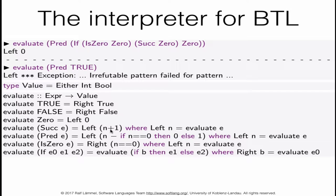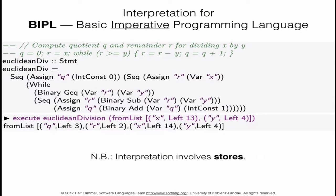For successor we construct n plus one, and for predecessor we check whether the intermediate result n is zero — if so we keep it, otherwise we subtract one. The 'is zero' test checks whether expression e evaluates to a number n equaling zero. The conditional of BTL is essentially translated into a conditional of the host language Haskell, with pattern matching on the condition part.